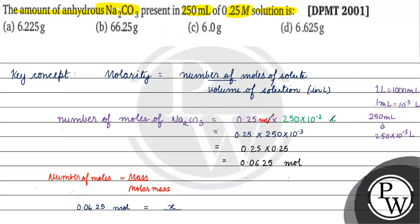Na is 23, so 23 into 2 equals 46. 46 plus 12 equals 58. For oxygen: 1 oxygen has atomic mass 16 grams, so 3 oxygens give 48. 58 plus 48 equals 106. So we have 106 grams per mole as the molar mass of Na2CO3.